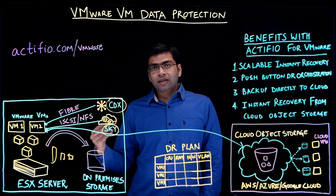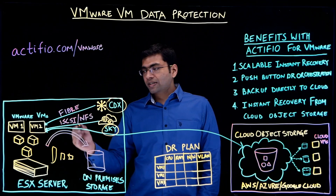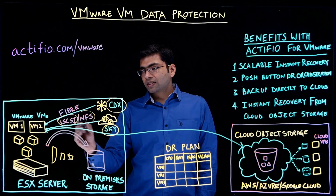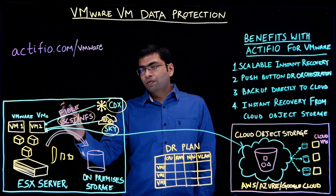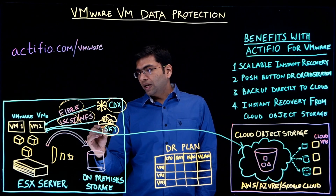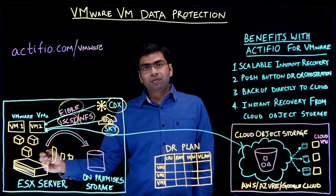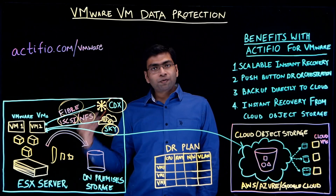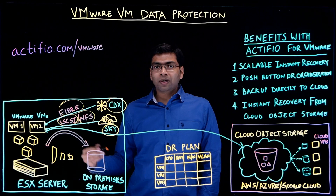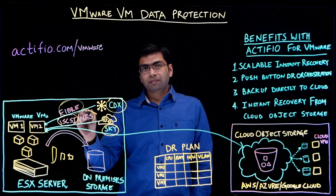Once the data is captured, you can mount the backup data set over iSCSI, NFS, or Fibre Channel to an ESX server and get instant recovery of the VMware VM. This is a significant advantage as a lot of other legacy backup vendors only work with NFS.